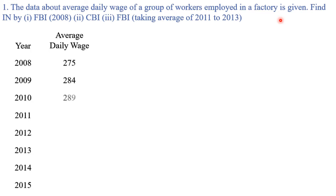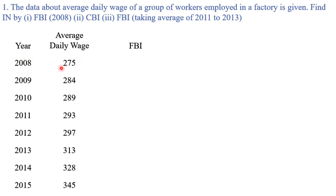We start with the fixed base index number, taking 2008 as the base year. Each time we calculate the index number, we compare it with the value of 2008. The formula is: current year value divided by base year value, multiplied by 100. For the year 2008 the index number is 275 upon 275 into 100, which equals 100. The base year index number will always be 100.